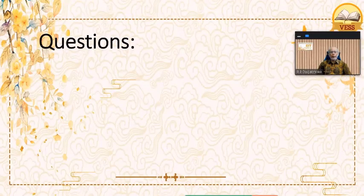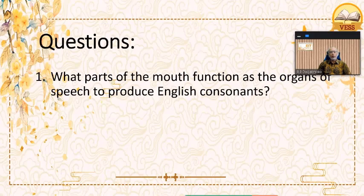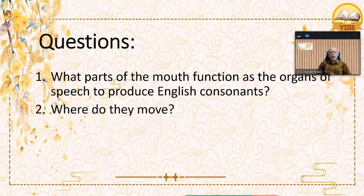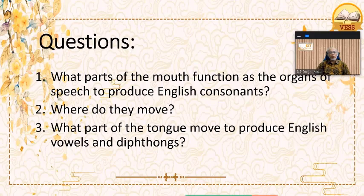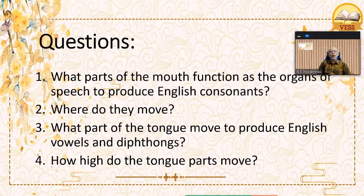In this video, I'm going to answer four questions. The first question is: what part of the mouth functions as the organs of speech to produce English consonants? The second question is: where do they move — so where do the parts of the mouth move? Question number three is: what part of the tongue moves to produce English vowels and diphthongs? And number four: how high do the tongue parts move?